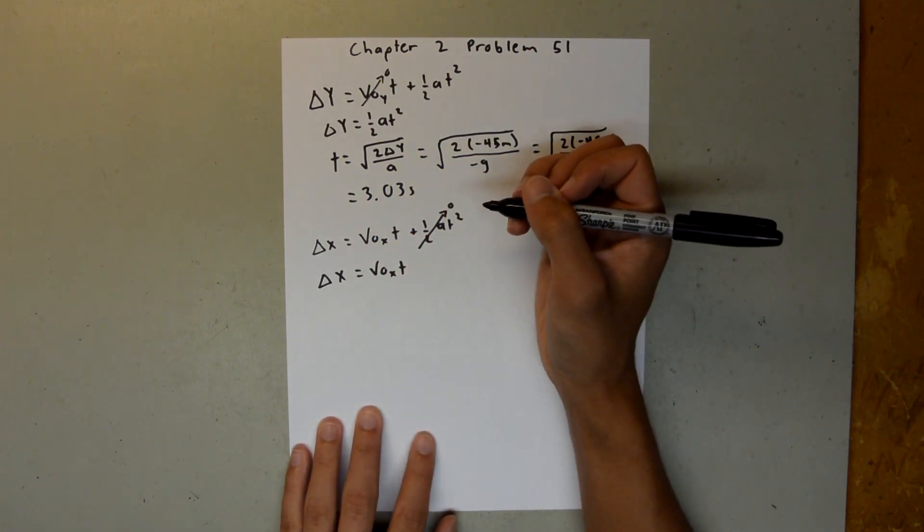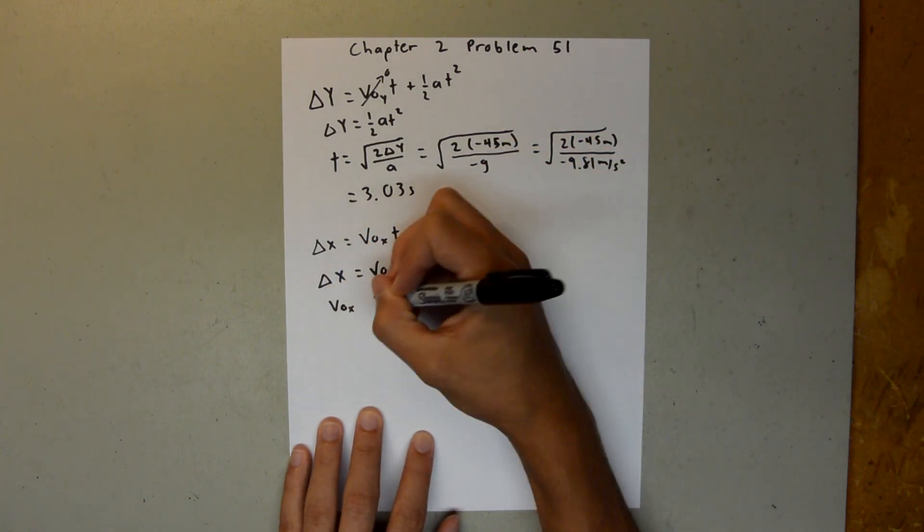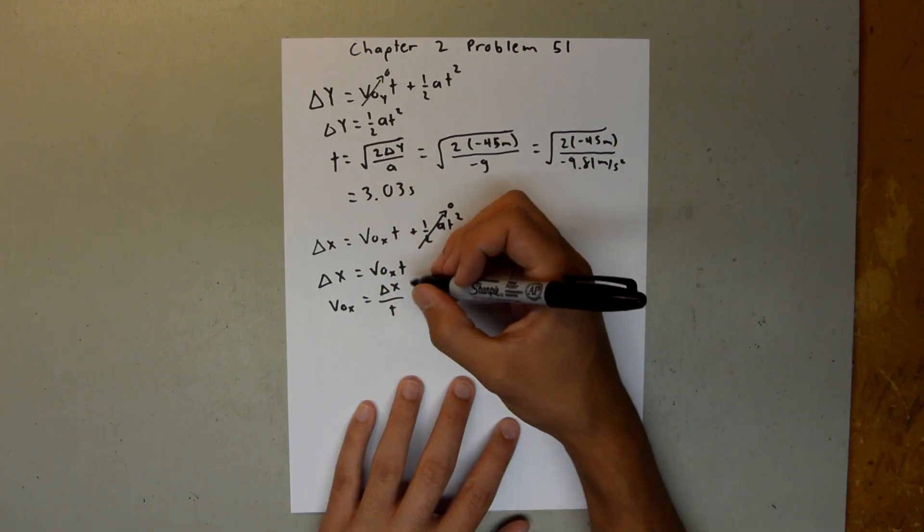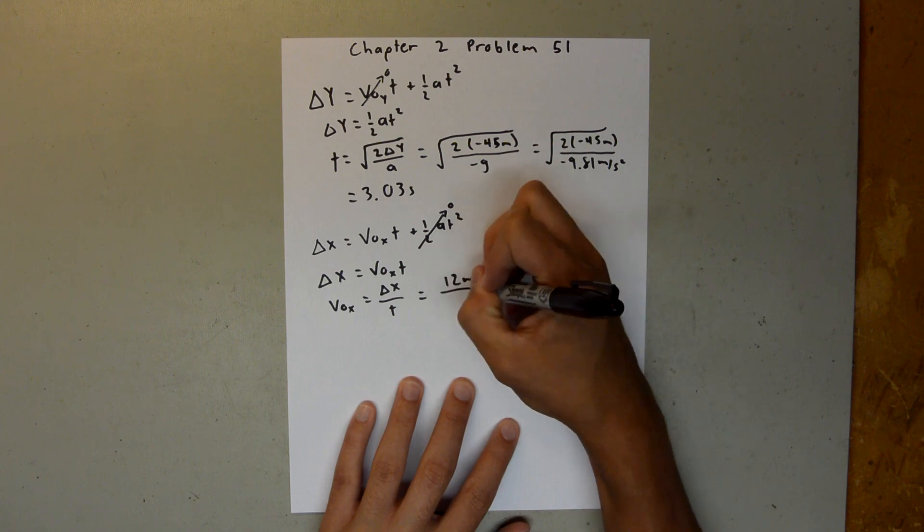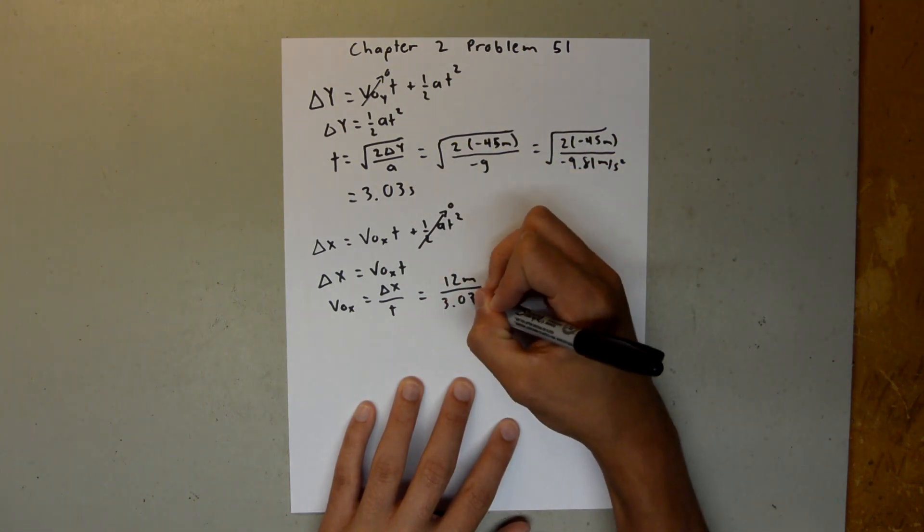And then we have delta x is equal to v0 x t, and we can solve this for the initial velocity in the x, and say the initial velocity in the x is equal to the displacement over time, and we are given those two values. So we have 12 meters, and we solved for t right here, over 3.03 seconds.